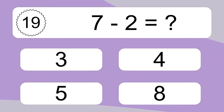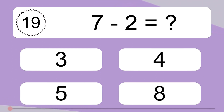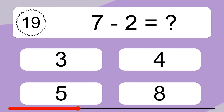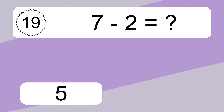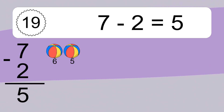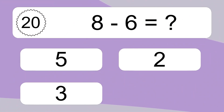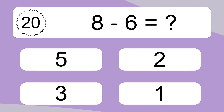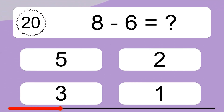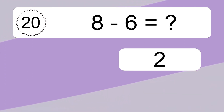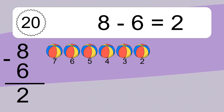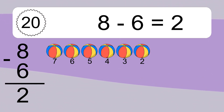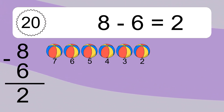7 minus 2 equals what? 18 minus 14 equals 5. Let's count it: 6, 5. 8 minus 6 equals what? 8 minus 6 equals 2. Let's count it: 7, 6, 5, 4, 3, 2.